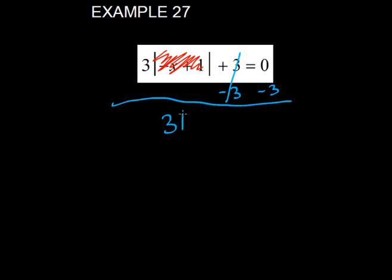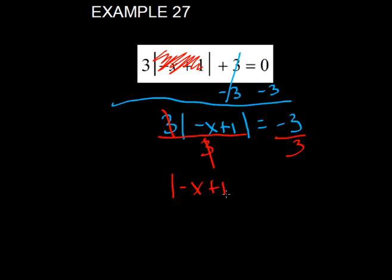So now I have 3 times the quantity of the absolute value of negative x plus 1. And then 0 minus 3 is negative 3. Now I'm going to divide everything by 3. 3 cancels that out, so I get the absolute value of negative x plus 1 equals negative 1.